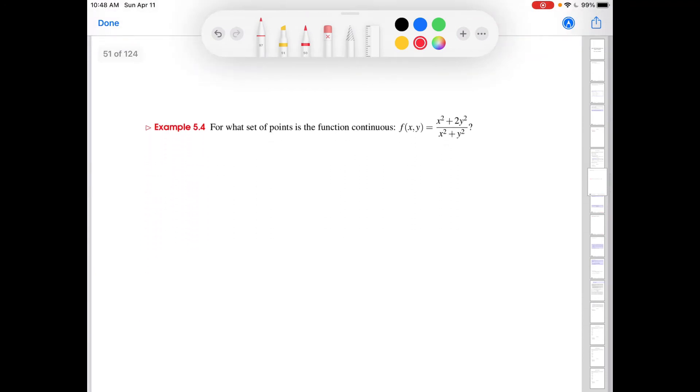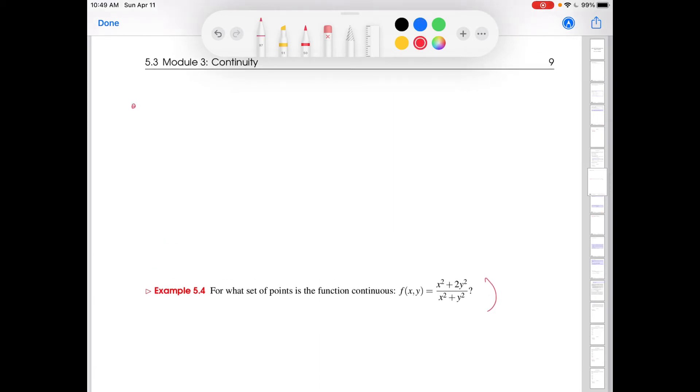So let me head to the first example. For what set of points is the function f(x,y) given by this continuous? Well, so this is a rational function, so I left a little space up here to also tell you that the same fact from single variable calculus transfers over. So for rational functions, you might remember that a rational function is a ratio of polynomials.